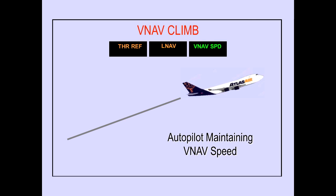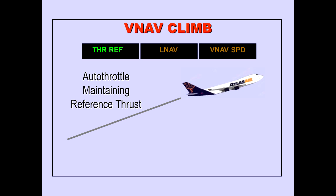During a VNAV climb, VNAV speed is displayed on the PFD, indicating that autopilot pitch is maintaining VNAV climb speed. During a VNAV climb, thrust reference is displayed on the PFD, indicating that the autothrottle is maintaining reference thrust.